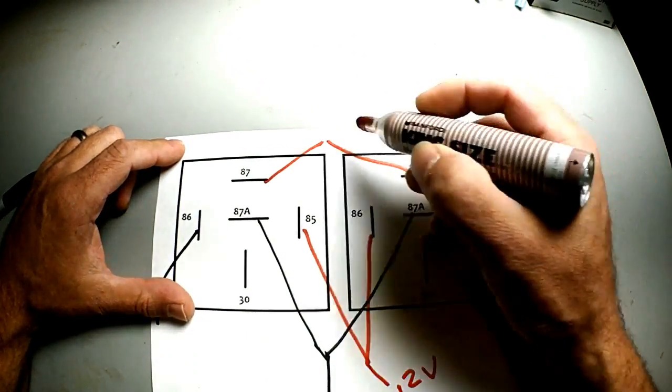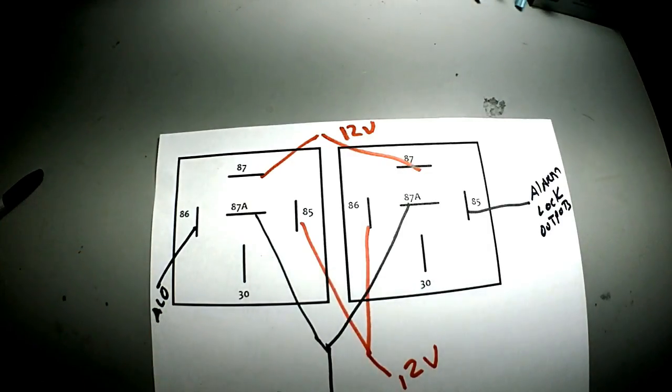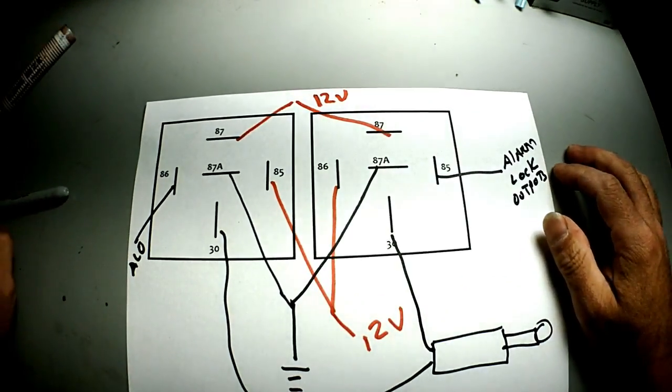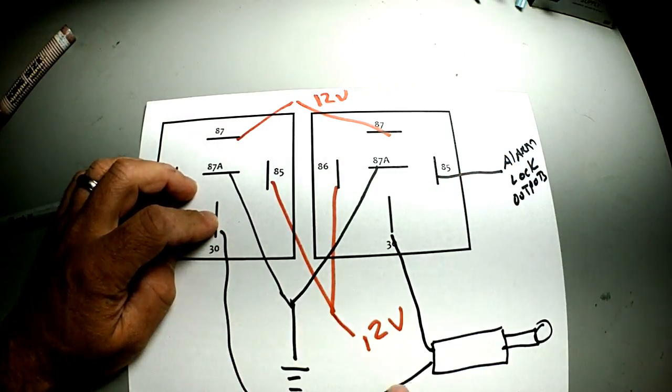Both 87s are going to go to 12 volts. And the two leftover 30s are going to go to your actuators.